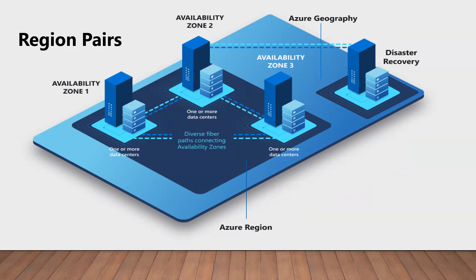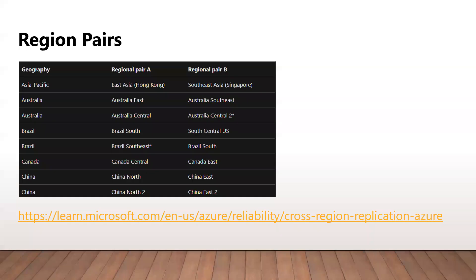However, there is an exception in region pairing where Brazil South is paired with a region outside its geography. Whenever a region goes down, the services automatically fail over to its dedicated regional pair. When this all comes together, we refer to it as Azure geography. On screen there is an extract from the Microsoft website which shows some of the region pairs.